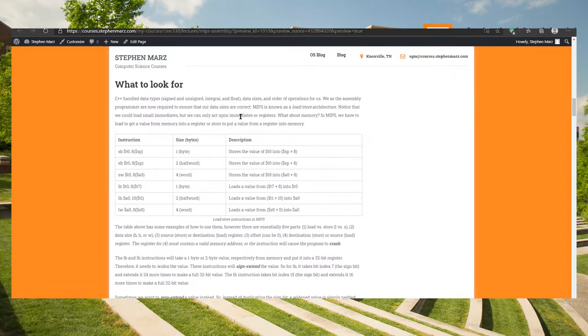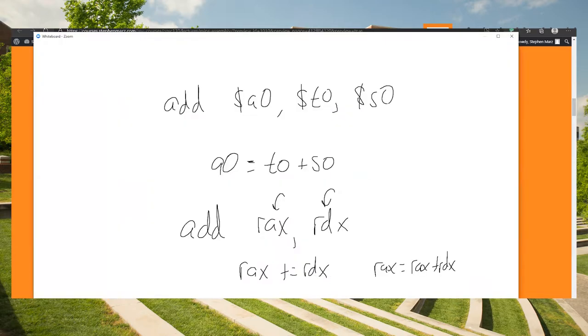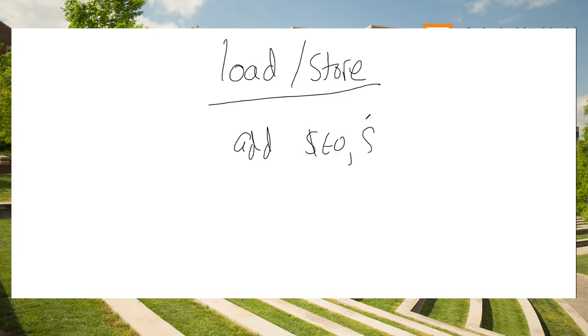This is called a load-store architecture — RISC, reduced instruction set computer. We have load and store instructions. A load-store architecture means that any time we use add or something like that, everything has to be inside of registers. On an Intel machine we can actually go out to memory and use that as an operand, but in the MIPS instruction set we can't do that. So we can't do something like add T0, A0, and a memory address like 0x3bfe. Instead with MIPS we have to use what's called load and store.